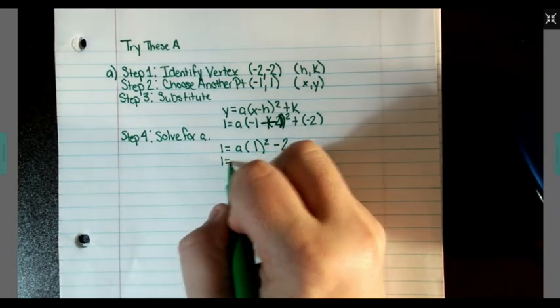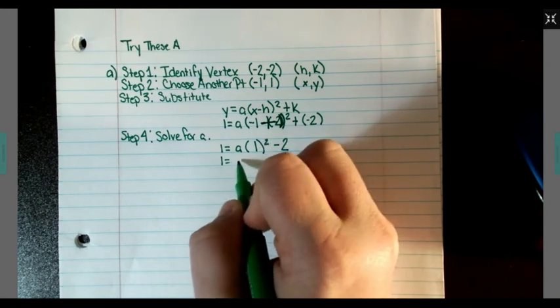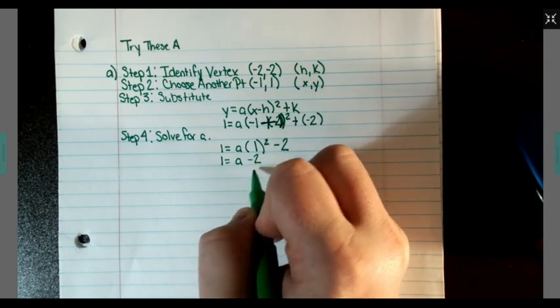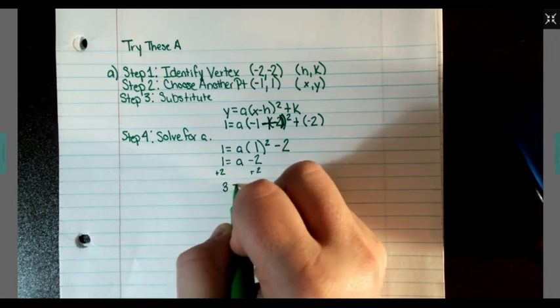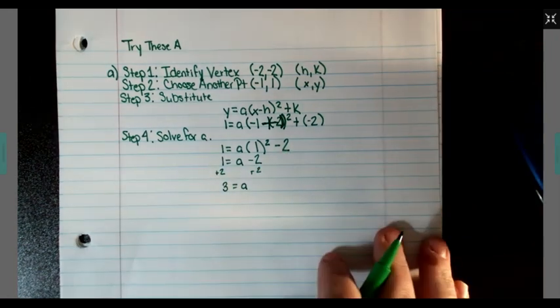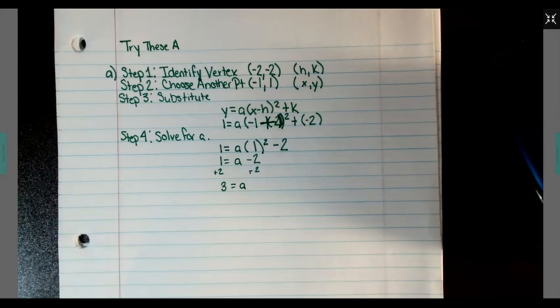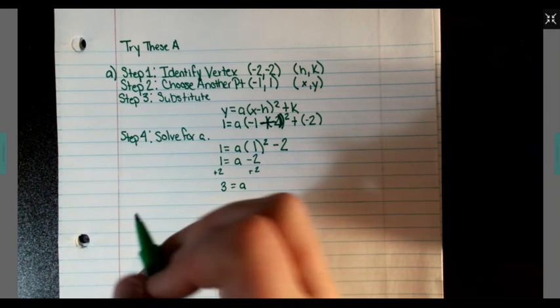Well, we know that 1 squared is 1, so this is just going to be A minus 2. We're going to have to add 2 to both sides. So we get 3 equal to A.